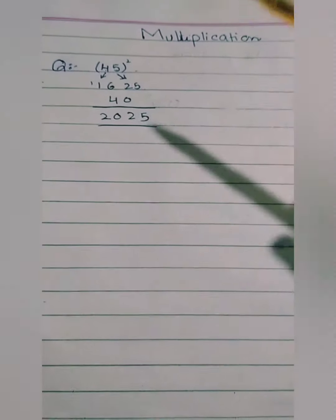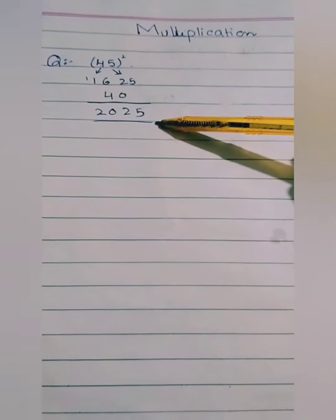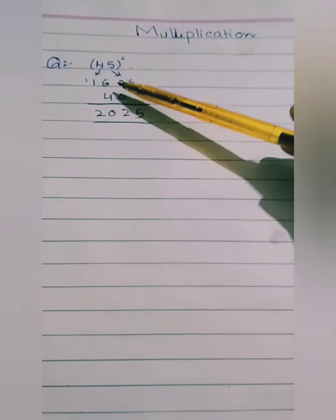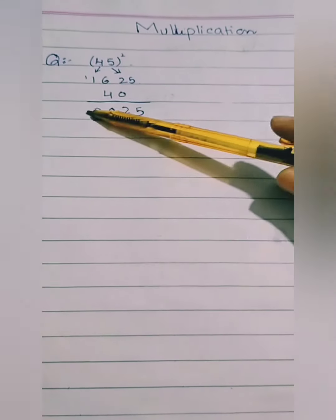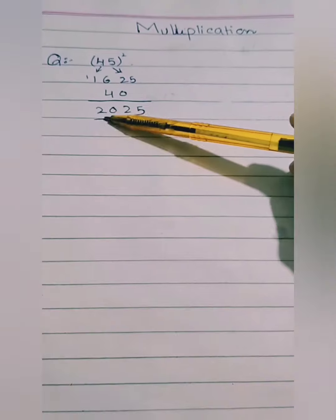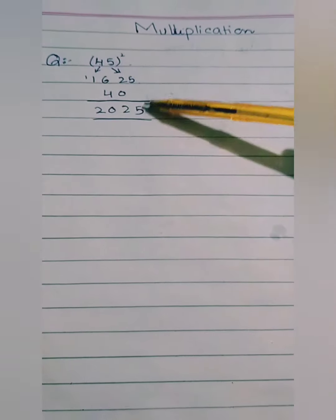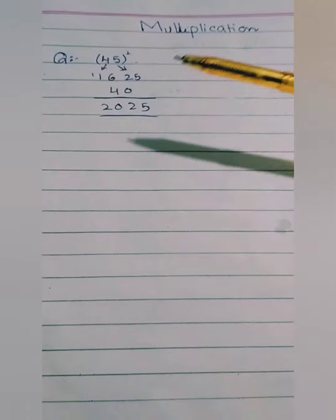Now what do we do? We will add them. 5 as it is, 2 plus 0 is 2, 6 plus 4 is 10, 0 and 1 carry over. Here is 2025. 45 squared is 2025. Look, in seconds we have the answer without calculator.